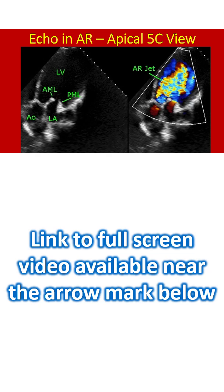The velocity of the aortic regurgitation jet is much higher than that of mitral stenosis, as the pressure difference between the aorta and left ventricle in diastole is much higher than that between the left atrium and left ventricle.